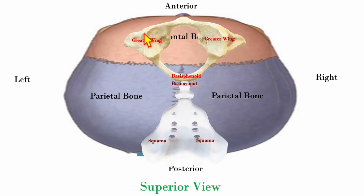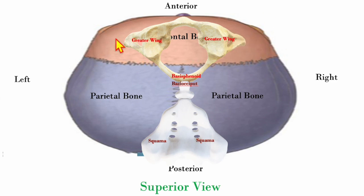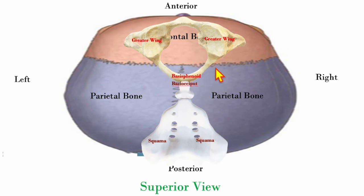There are the greater wings of the sphenoid, the basi-sphenoid, the basi-occiput, and the squamous. Your second digit or index finger is going to be on the greater wings, and your fifth digit or pinky finger is going to follow the occipital squamous.